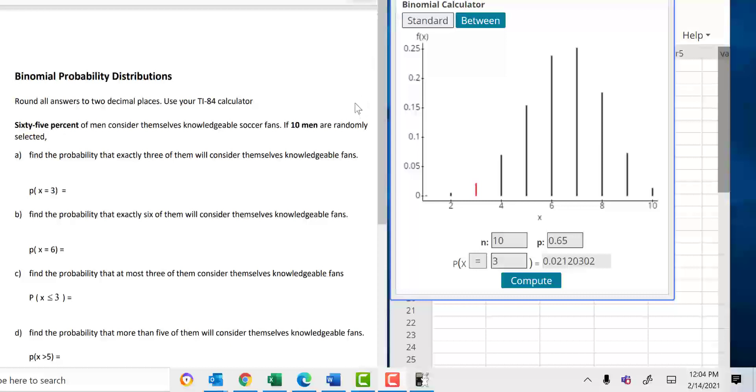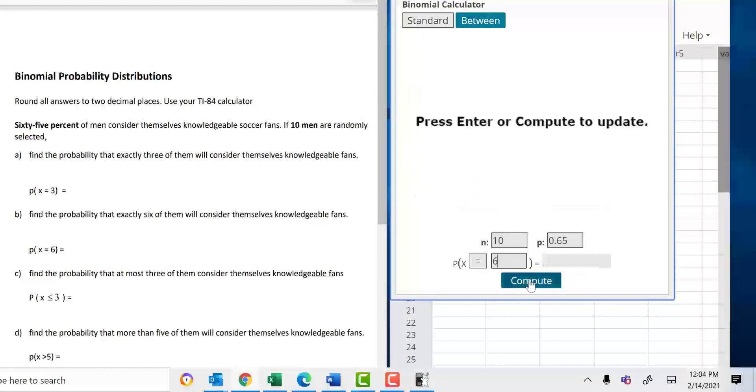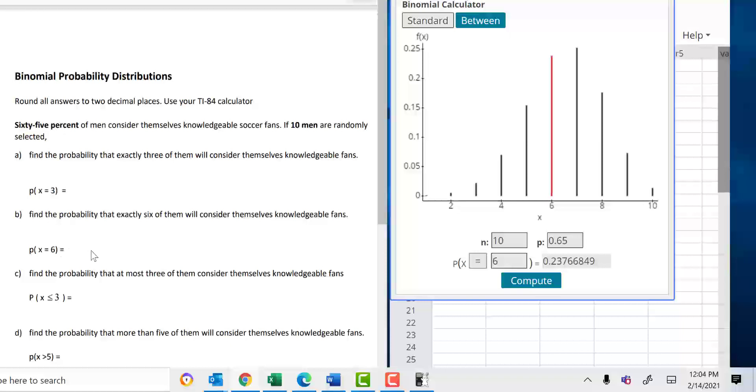B, find the probability that exactly six of them will consider themselves knowledgeable fans. Watch. You just change the 3 to 6 and hit Compute. And here you go. You got the answer. That's the probability of X equals 6, which is 0.2377 if you round to four decimal places.